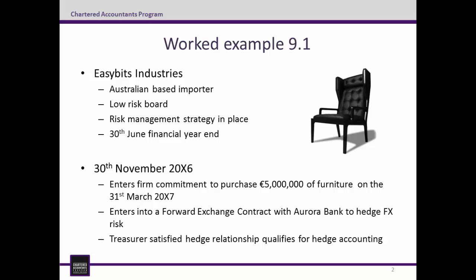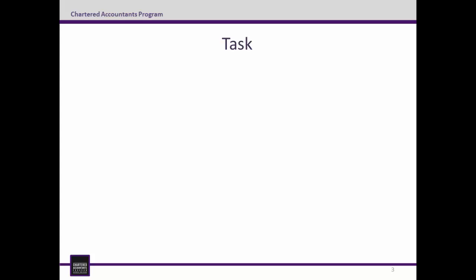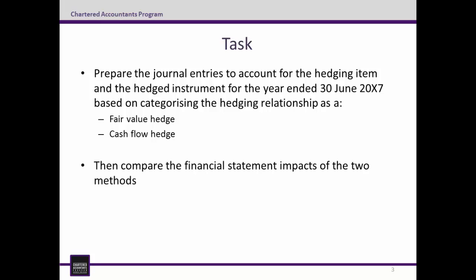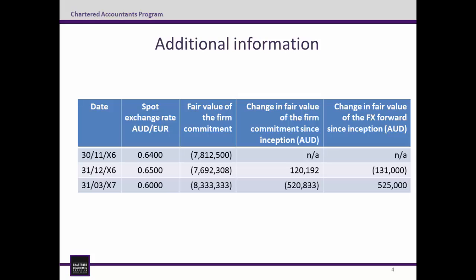We are also ignoring tax here. The task is to prepare the journal entries to account for the hedged item and the hedging instrument for the year ended 30 June 2007, based on categorising the hedging relationship as a fair value hedge and as a cash flow hedge. The final part of the task is to compare the financial statement impacts of the two methods. Additional information on the spot exchange rates and fair values of the firm commitment and FX forward are provided. We are not interested in how these fair values came about, just the fact that we have them.